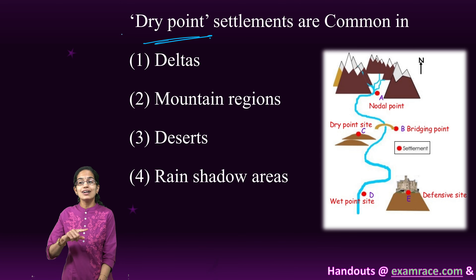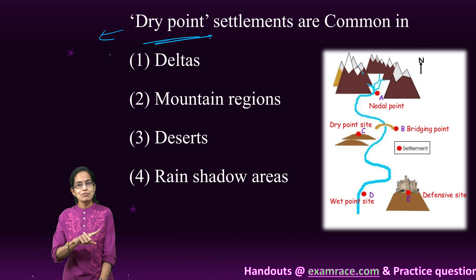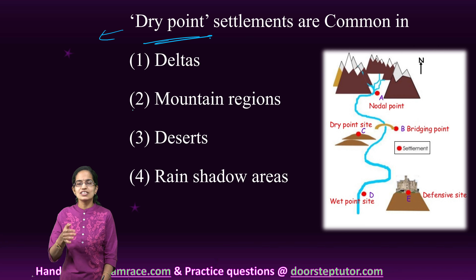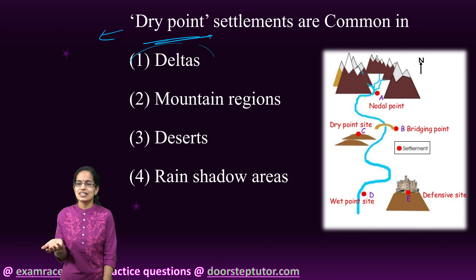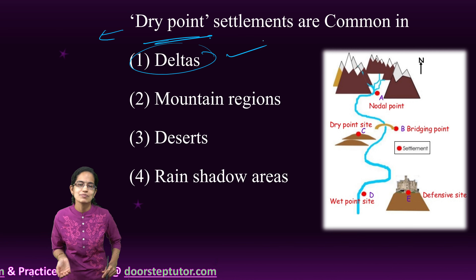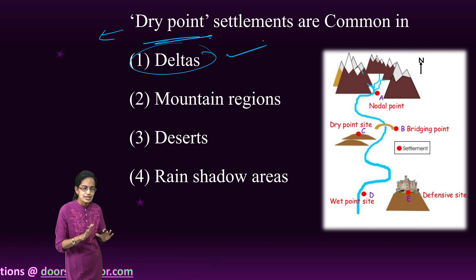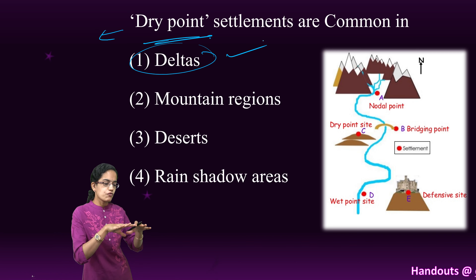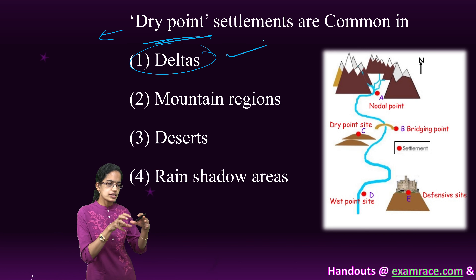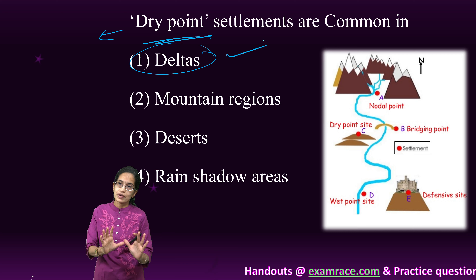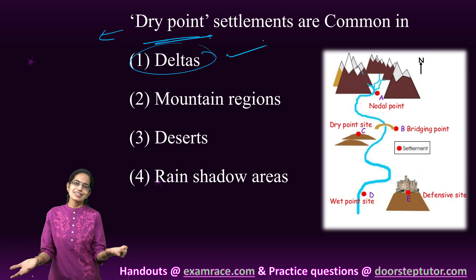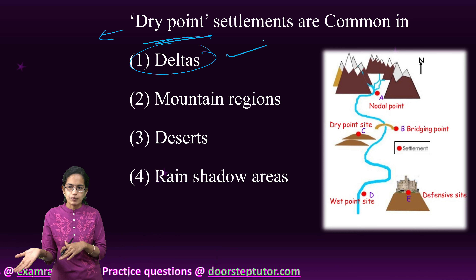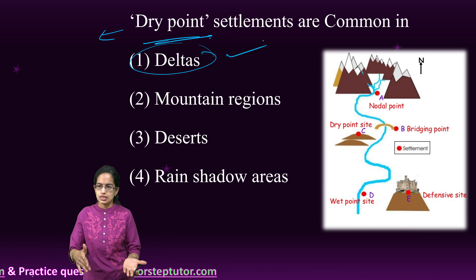Dry point settlement occurs in a wet area, and wet point settlement occurs in a dry area. For example, a delta is a wet area, so dry point settlement would be seen there — meaning a dry, flood-free region within a wet surrounding. An oasis is an example of wet point settlement, which is a wet region in a dry surrounding. Dry point settlement examples include deltas.